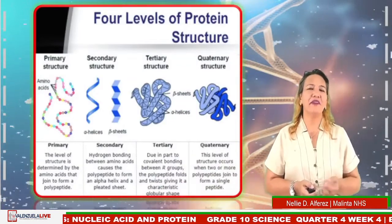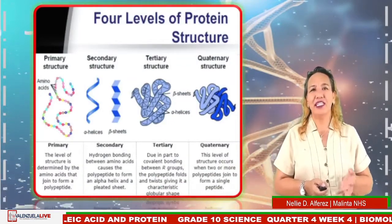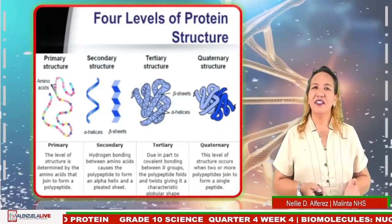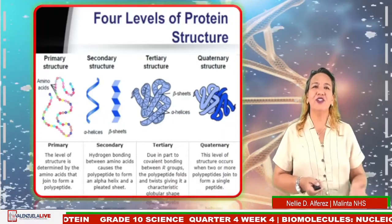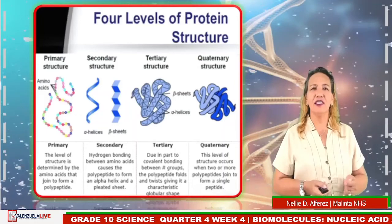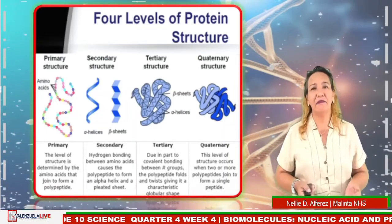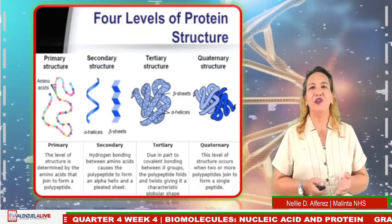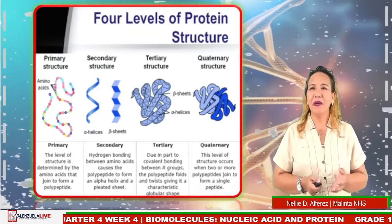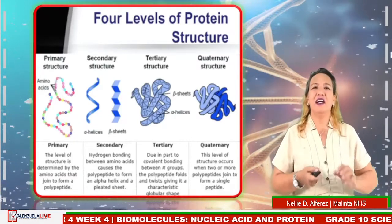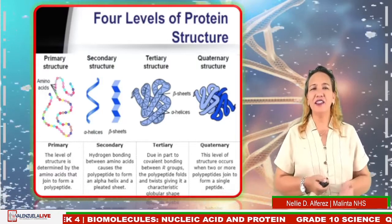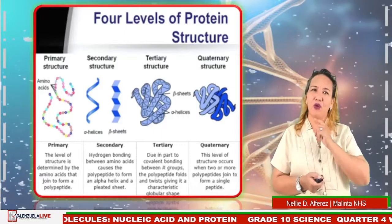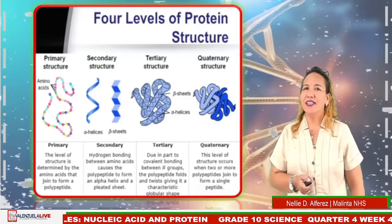Protein has four levels of structure. The first is the primary structure, determined by the amino acids that join to form a polypeptide. The second is the secondary structure, where hydrogen bonding between amino acids causes the polypeptide to form an alpha helix and pleated sheets. The tertiary structure is due to covalent bonding between the R groups of the polypeptide, giving it a characteristic globular shape. The quaternary structure occurs when two or more polypeptides join to form a single protein.